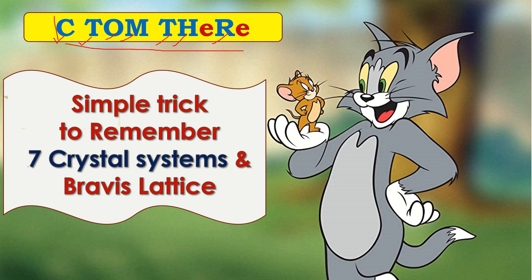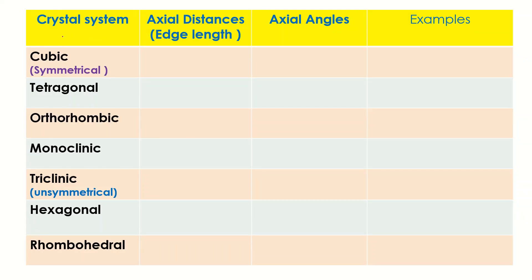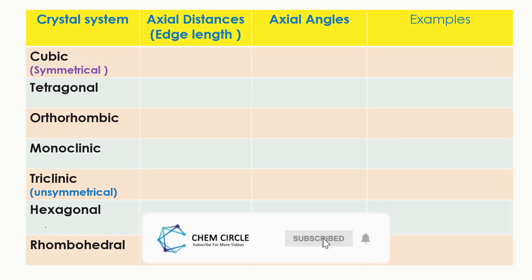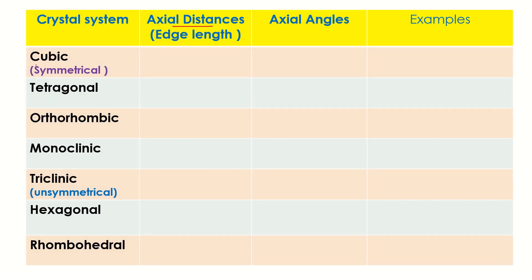Let's apply the shortcut. Write the crystal systems in order: cubic, tetragonal, orthorhombic, monoclinic, triclinic, hexagonal, and rhombohedral — do not change the order. For axial distances: the first one (cubic) and the last one (rhombohedral) have equal axial distances, meaning a = b = c.